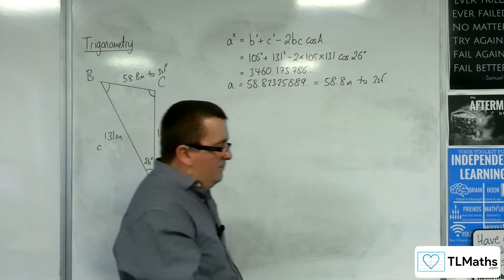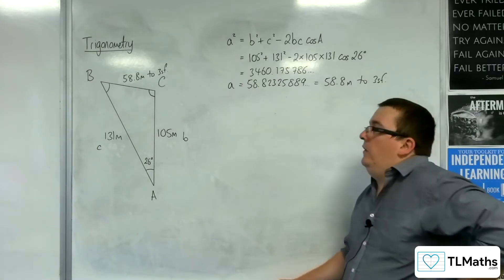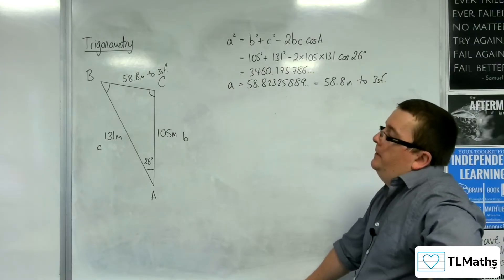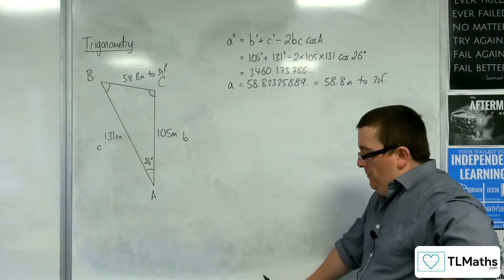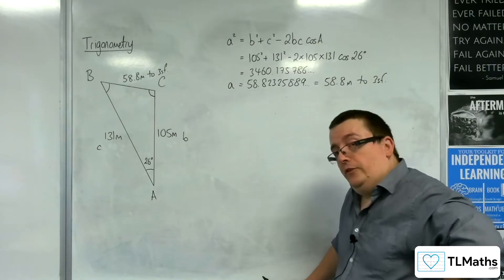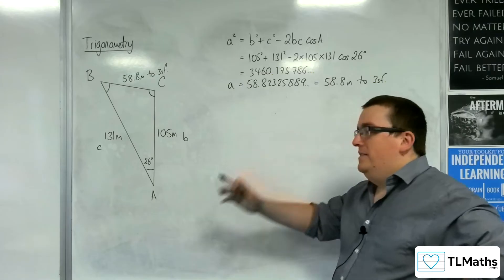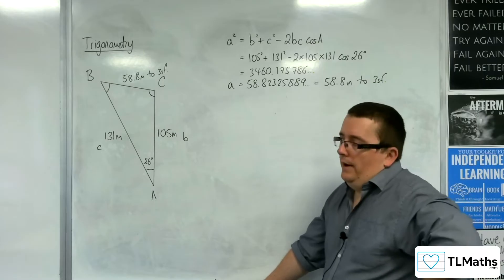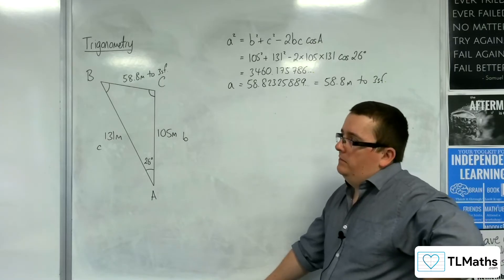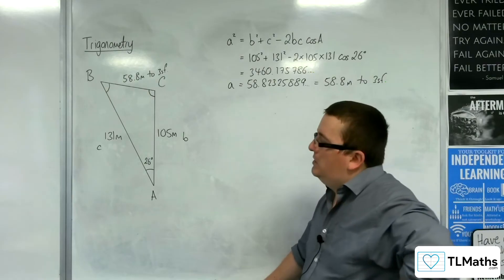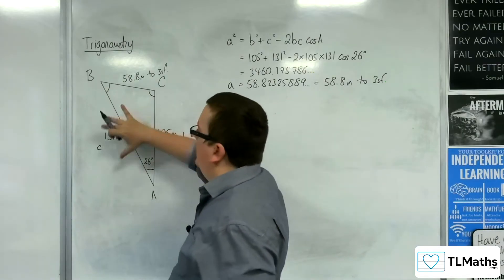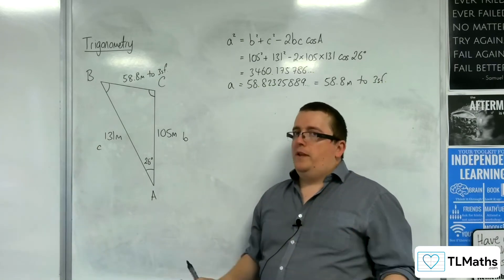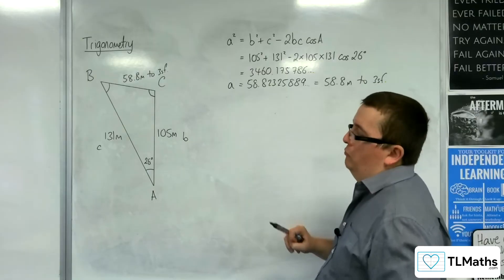Next thing is we would either be looking for angle b or angle c. Now, what I should point out is that I haven't drawn this diagram accurately. So, we can't necessarily trust the diagram. However, I have drawn it in such a way that it seems to be appropriate. It seems to be reasonably all right. 105 is less than 131, 26 degrees looks about right. So, although I haven't drawn it accurately, it does seem to be appropriate.